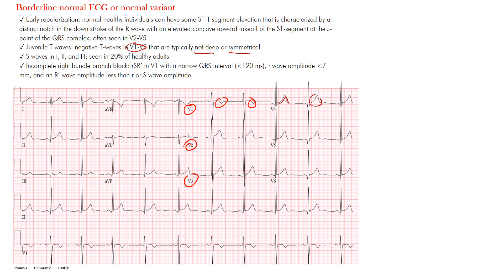These negative T-waves in V1 to V3 are typically not deep or symmetrical. Remember, symmetric T-waves are more pathologic compared to asymmetric ones. These T-waves have a slow upstroke and downstroke — those are normal T-waves. Another normal variant is S-waves in leads V1, or leads I, II, and III, seen in about 20% of all healthy adults. It's a benign finding — small S-waves, possibly barely present or not present in lead III.